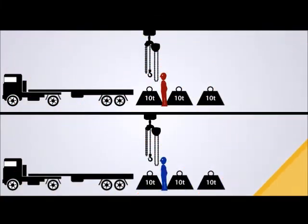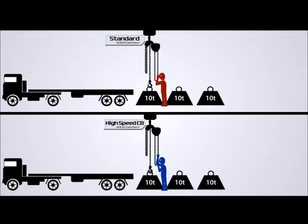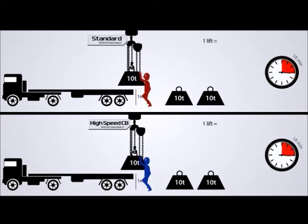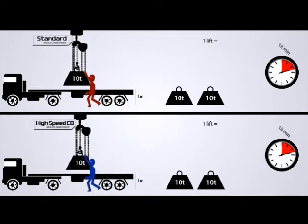Let's consider a typical application for a 10-ton manual hoist. Both operators have to pull almost 400 meters of hand chain to move the hook one meter, taking almost 18 minutes to complete one lift.